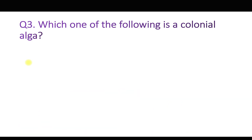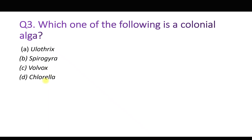Question number three: Which one of the following is a colonial alga? Option A: Ulothrix, B: Spirogyra, C: Volvox, and D: Chlorella. Out of these four options, one is colonial while the other three are filamentous. The correct answer is C, Volvox. Ulothrix, Spirogyra and Chlorella are filamentous, while Volvox is a colonial alga. A single colony of Volvox looks like a ball of about 0.5 mm diameter.